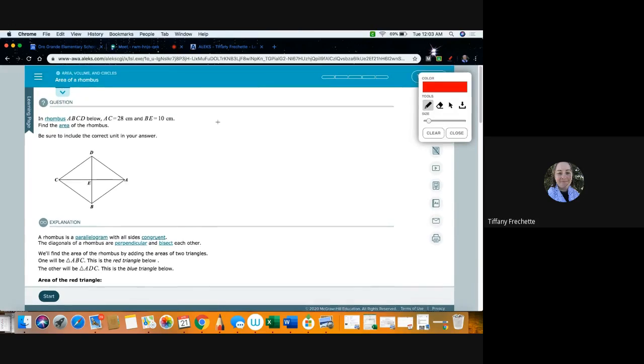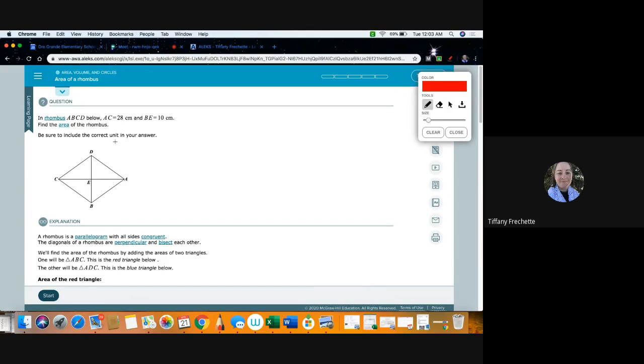Area of a rhombus. Alright, so in this topic we're going to find the area of a rhombus. So what is a rhombus? A rhombus is a parallelogram with all congruent sides. So a special rhombus is a square. A square is a rhombus that has four 90 degree angles. But a rhombus doesn't have to be a square, it can just be kind of more of a diamond type shape here.